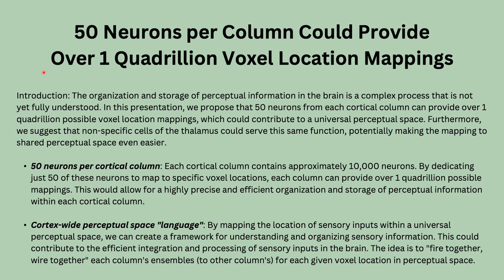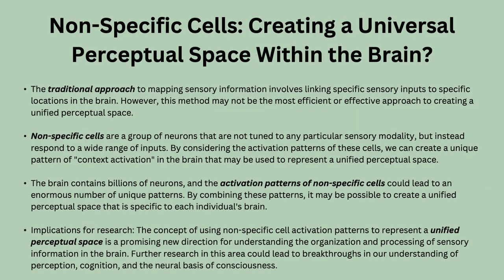This slide continues discussing cortical columns for a shared perceptual space — 50 neurons per column would be a 50-bit binary storing one quadrillion possible encodings as mappings to specific voxel locations. But another option: instead of a hundred thousand copies of the perceptual space mapping, what if you use the thalamus — specifically the non-specific cells therein — and let their connections with the cortex encode the universal shared perceptual space? Then you only need one instantiation rather than repeating it a hundred thousand times.